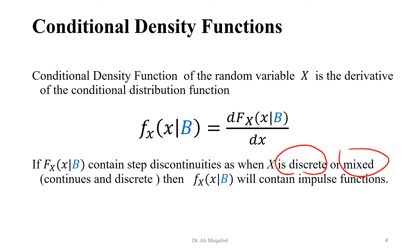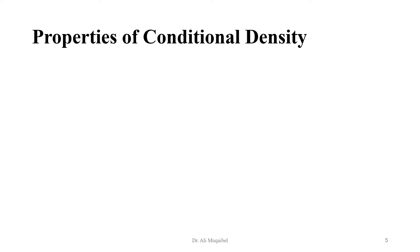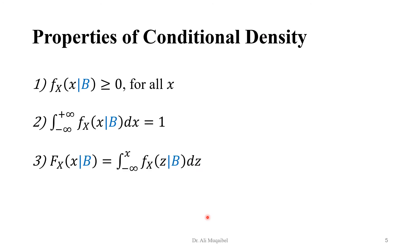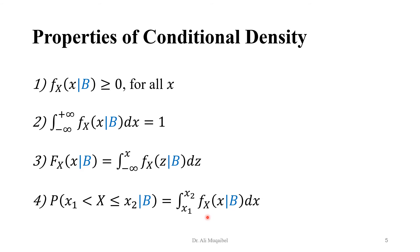We can also have the properties of the conditional density function. Again, it's just a valid density function, so all properties of a density function — whether conditional or not — are the same: being positive, area equal to 1, and its relation to the CDF being the integral of the density. Also, if you want to find the probability given the density, you have to integrate over the given range. This condition is just added to all formulas.